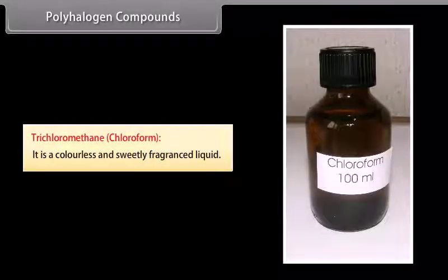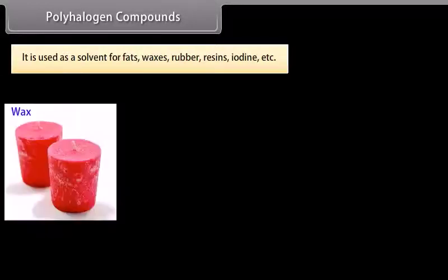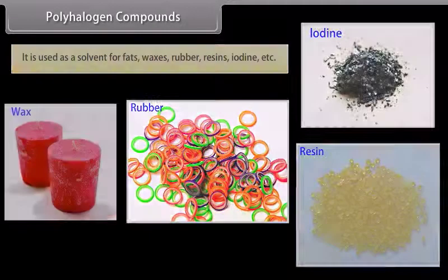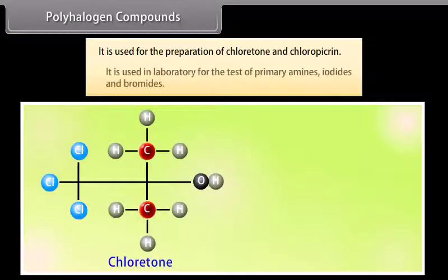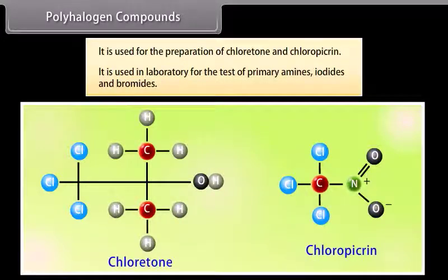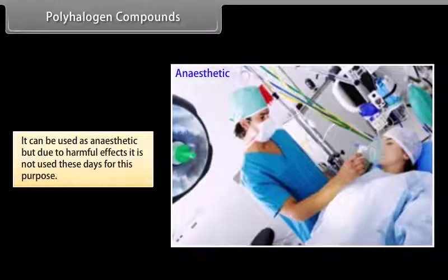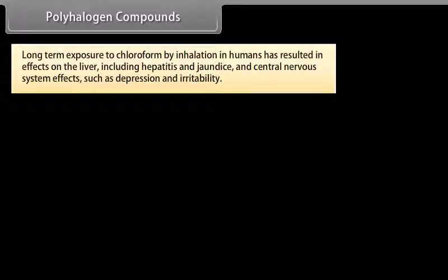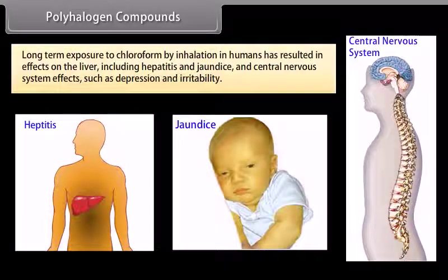Trichloromethane, chloroform. It is a colorless, sweetly fragranced liquid. It is used as a solvent for fats, waxes, rubber, resins, iodine, etc. It is used for the preparation of chloretone and chloropicrin. It is used in laboratory for the test of primary amines, iodides, and bromides. It can be used as anesthetic, but due to harmful effects it is not used these days for this purpose. Long-term exposure to chloroform by inhalation in humans has resulted in effects on the liver, including hepatitis and jaundice, and central nervous system effects such as depression and irritability.